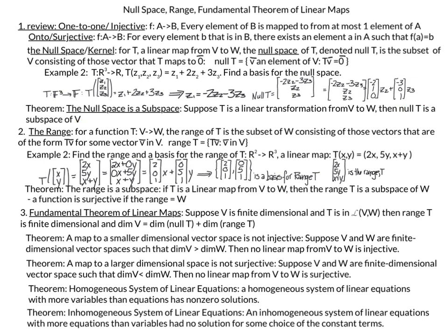Our new material starts with the range. For a function T going from V to W, the range of T is the subset of W consisting of those vectors of the form T(v) for some vector v in V. Our first example is to find the range and a basis for the linear map T from R2 to R3, where T of (x, y) equals (2x, 5y, x plus y).